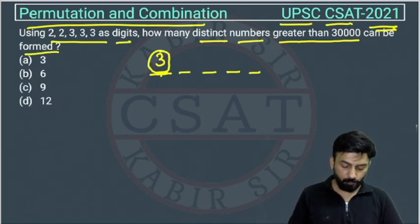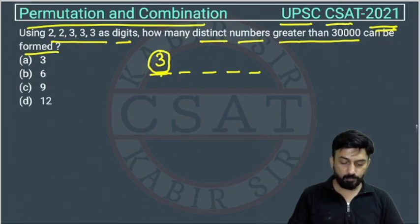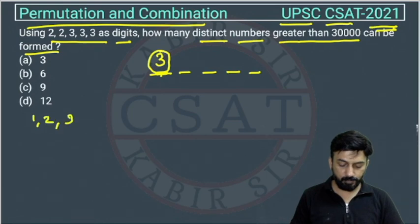So here we will use one formula. Suppose there are N objects. So there are N objects. Suppose these are like first, second, third. In this way, we have N objects.